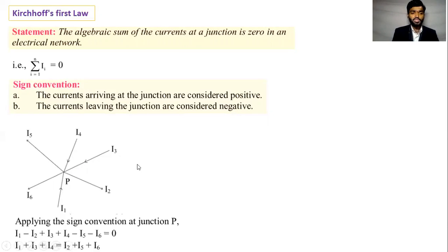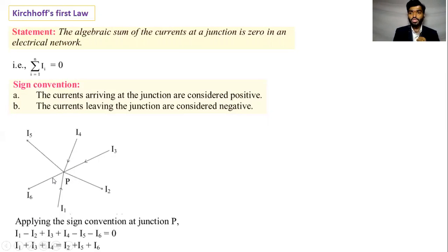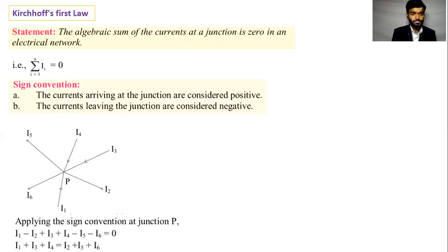Look at this diagram. Applying the sign convention at the junction — the junction is P. Here we use the sign convention. The currents arriving at the junction, which have the positive sign, are I1, I3, and I4.